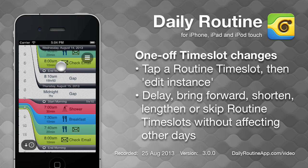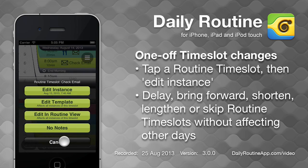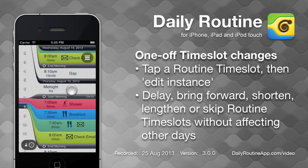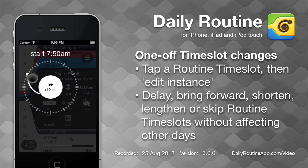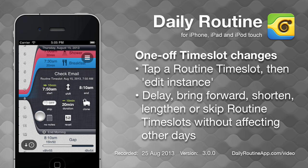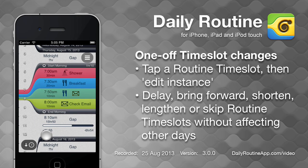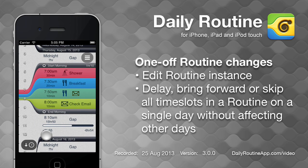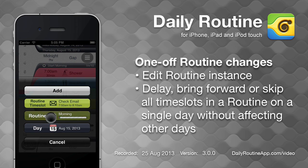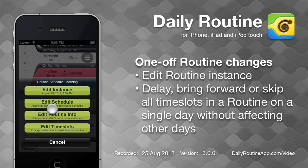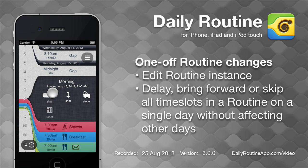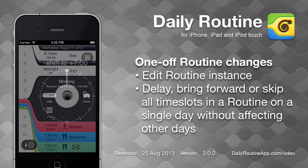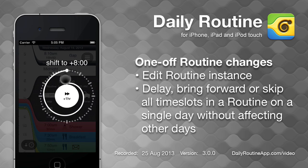To make a one-off change to a routine's time slot, tap that time slot's icon or title, then tap Edit Instance, and make the change. Other instances of this time slot will not be affected. To make a change to the entire routine on a specific day, tap within the routine on that day, then choose the routine, and tap Edit Instance. You can then shift or skip the entire routine instance without affecting other instances of the routine.